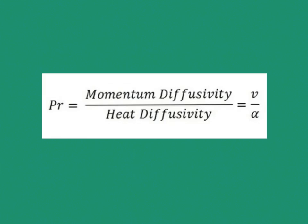From the definition, the Prandtl number is defined as the ratio of momentum diffusivity to thermal diffusivity. But first we need to understand what momentum diffusivity and thermal diffusivity are. We have two types of properties: system properties and cell properties. The three system properties are mass diffusivity, momentum diffusivity, and thermal diffusivity, and all three have the same unit: meter squared per second.